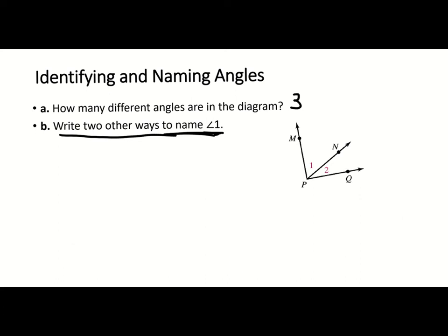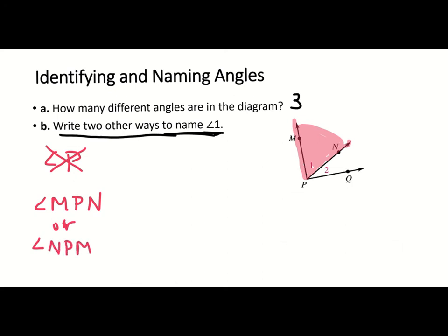Here is angle one. We want to name it two different ways — they called it angle one because they put a one in there. Now if you said angle P, it's a good start but it is not a correct name, because we have two adjacent angles here and I don't know which angle you're talking about if you just say angle P. So we would have to name it by three letters: we can call it angle MPN, or we can reverse it and call it angle NPM. We can't just use angle P because P is the vertex for multiple angles.